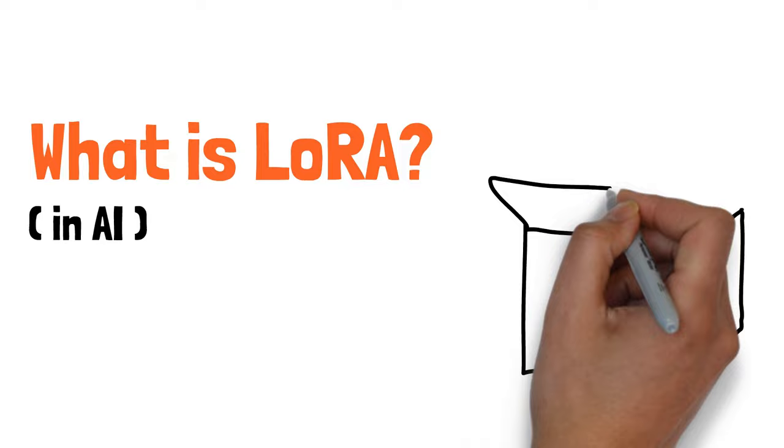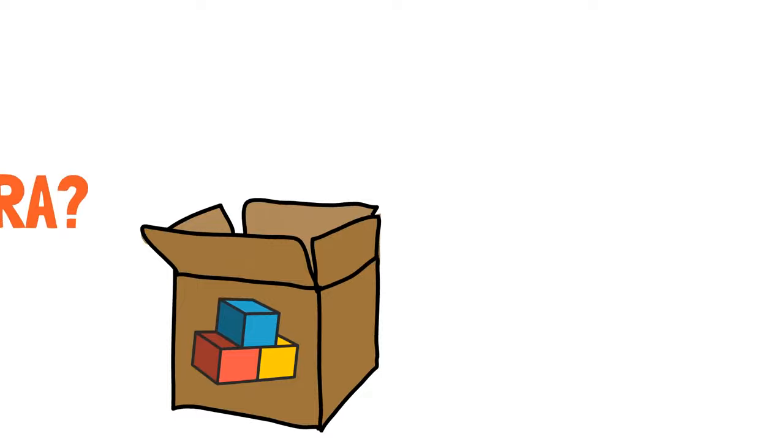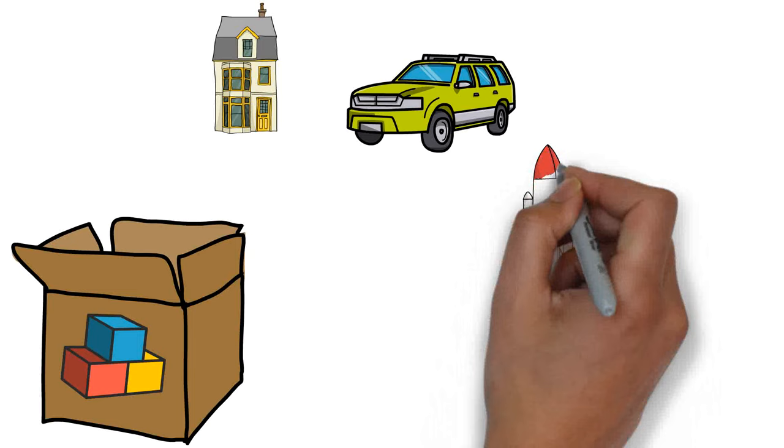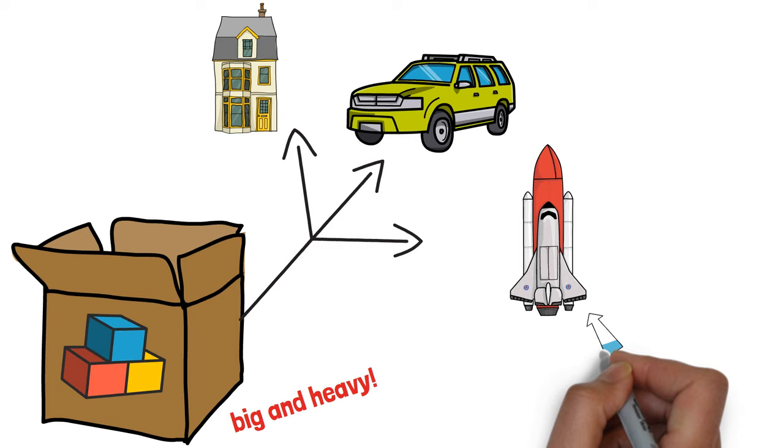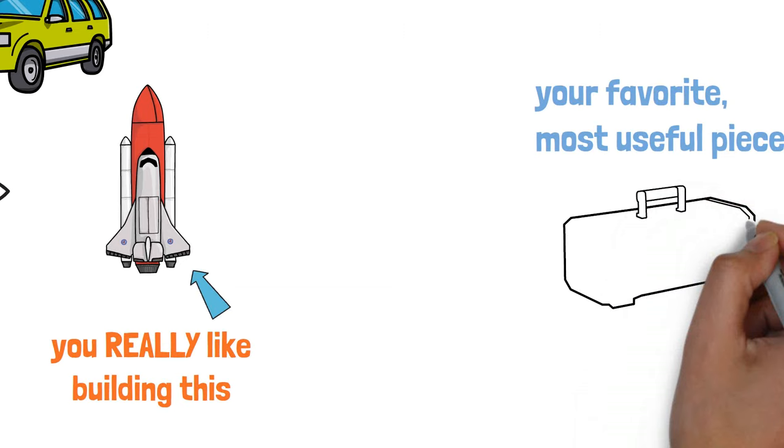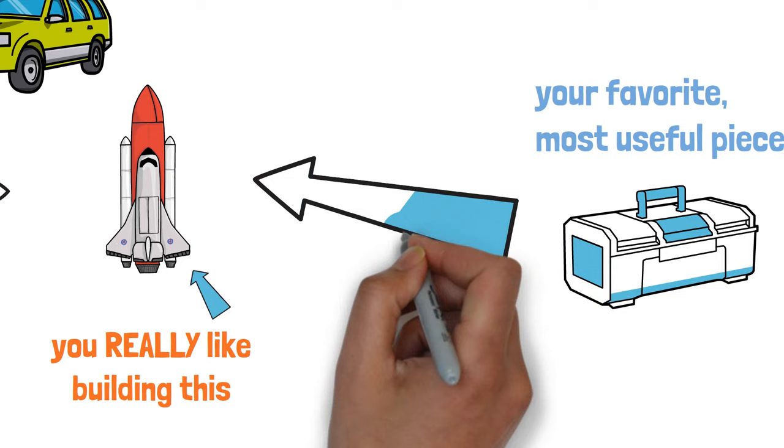Imagine you have a giant box of Legos. You can build all kinds of things with this giant box. Houses, cars, spaceships. But it's so big and heavy that it's hard to carry around. And most of the time, you don't need all these Legos to build what you want to build. So instead, you build a smaller box of your favorite, most useful Legos. This smaller box is easier to carry around, and you can still build most of the things that you want.